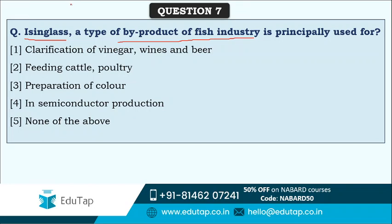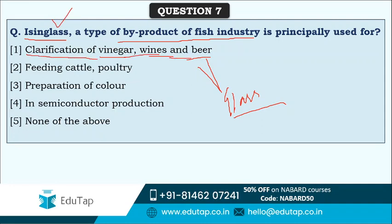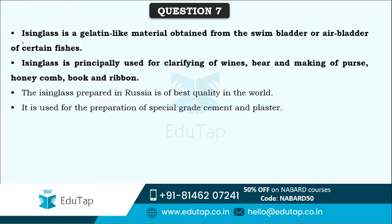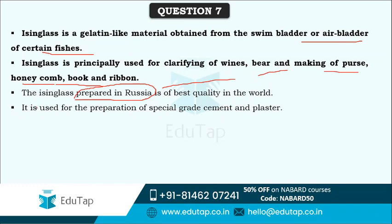There is a trick to remember this: vinegar, wines, and beer are all stored in glass, so Isinglass is related to the clarification of vinegar, wines, and beer. The answer is option one. Isinglass is actually a gelatin-like material obtained from the swim bladder or air bladder of fishes, and it is principally used for clarifying wine, beer, and vinegar. It is also used for making purses, honeycomb, book covers, and ribbons. The best quality of Isinglass is prepared in Russia, and it is also used for preparation of special grade cement and plaster.